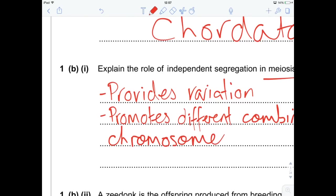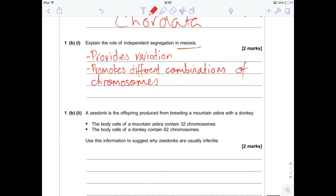And finally, we're looking at Zedonks. So a Zedonk is a crossbreed of a mountain zebra and a donkey. I'll not underline, I'll highlight. The body cells of a mountain zebra contain 32 chromosomes. The body cells of a donkey contain 62 chromosomes. Explain why Zedonks are usually infertile. So, what we need to do, these are the diploid numbers we've got. We need to figure out the haploid numbers.